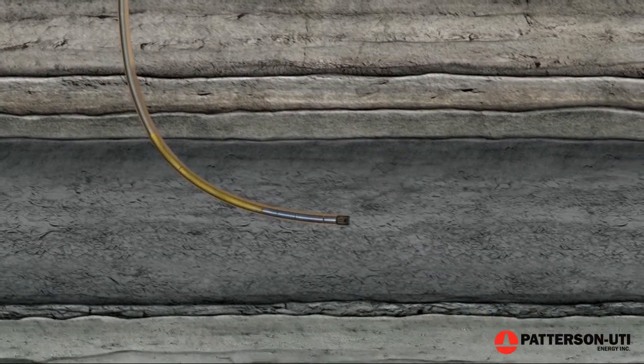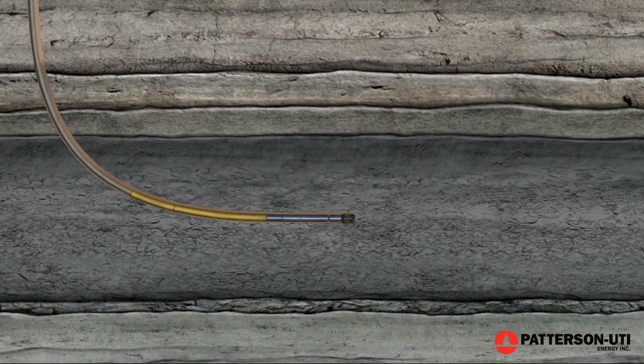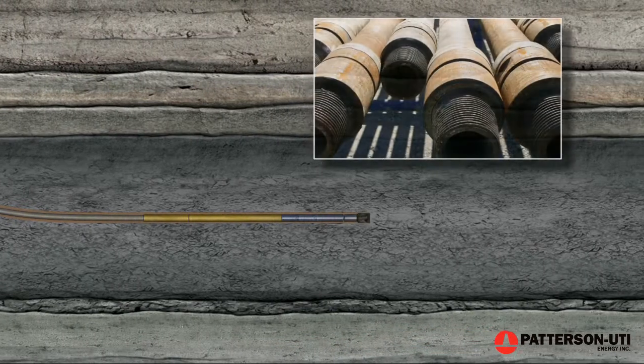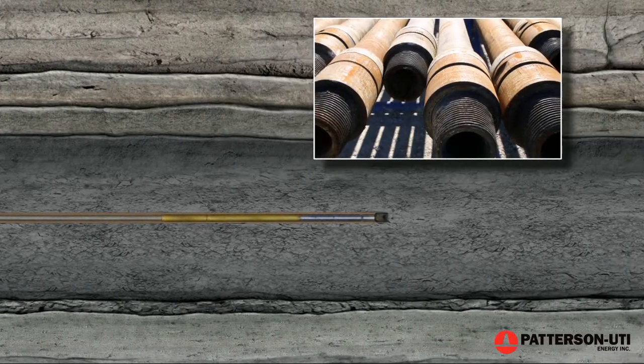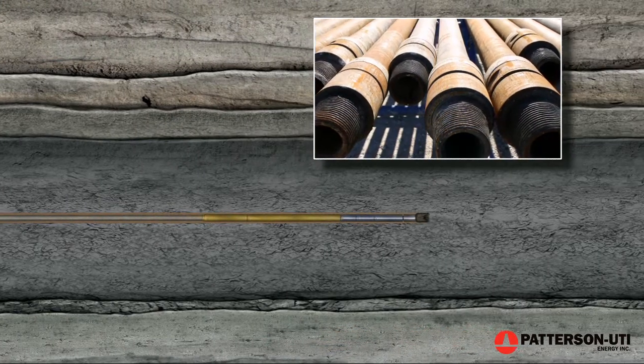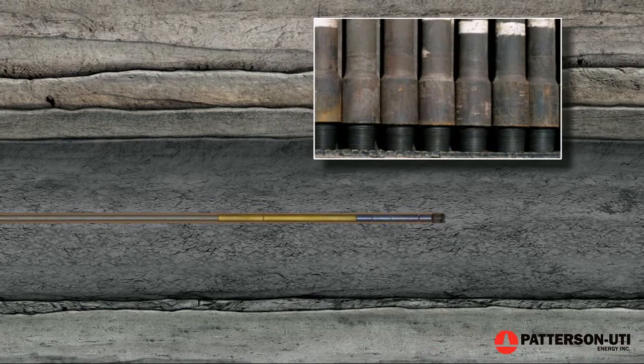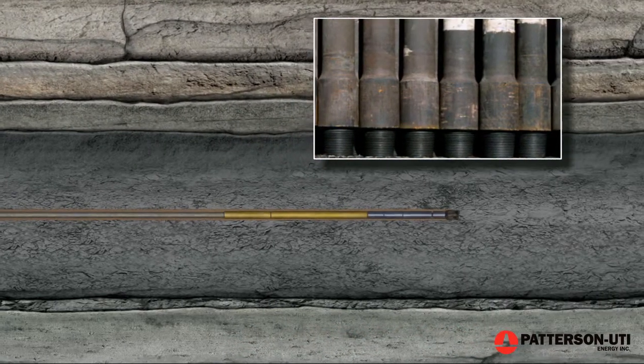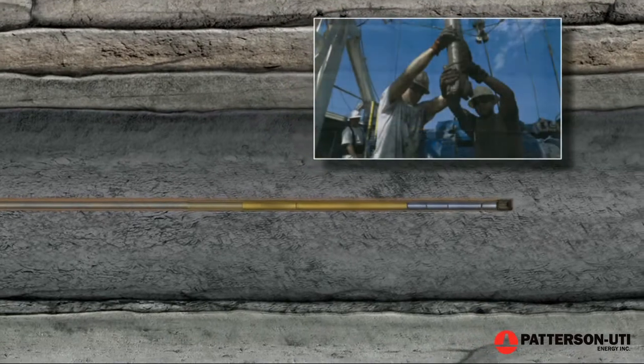Once the curve is completed, drilling begins on the well's horizontal section, called the lateral. The pipe used to drill the well measures 30 feet in length and weighs approximately 495 pounds each. It takes over 350 pieces of pipe weighing nearly 87 tons to drill a 10,500 foot well.